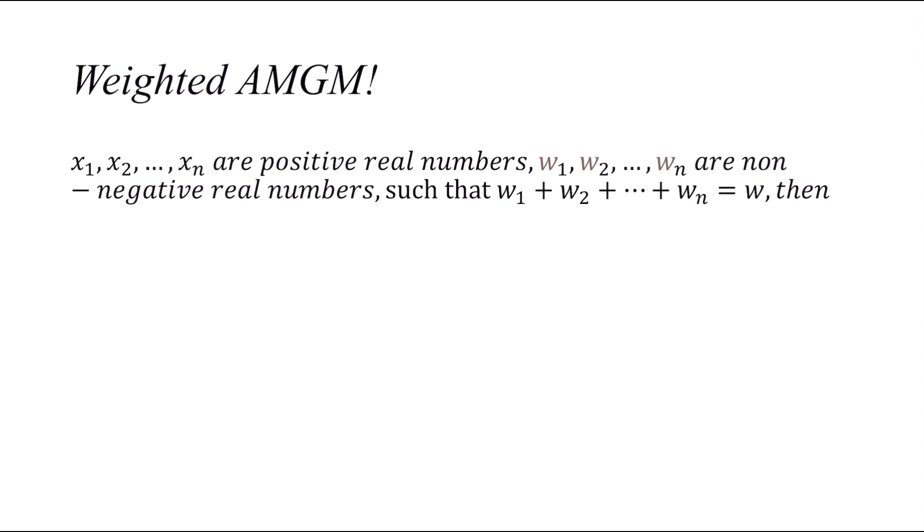Here I will introduce the weighted form of the AM-GM inequality. We have seen this inequality without the weights in previous videos if you want to check them out. It states that x₁, ..., xₙ are positive real numbers, w₁, ..., wₙ are non-negative real numbers such that w₁ + ... + wₙ = w, then we have the following inequality.